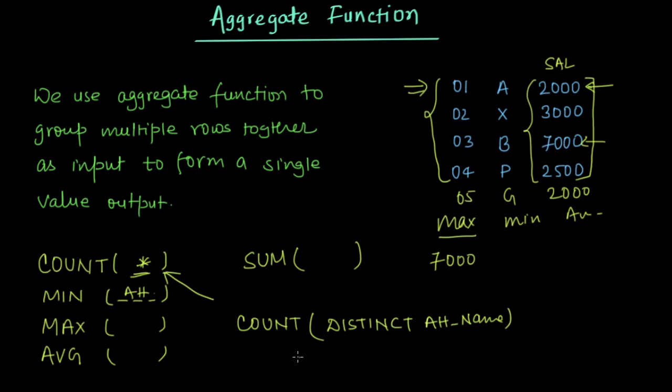So what it will do in this case, if we don't provide this distinct keyword, it will give us the count as 5. But if we provide this distinct keyword, it will count the distinct values for the salary. So as we have repeated value here for 2000, so 2000 will be counted only once.